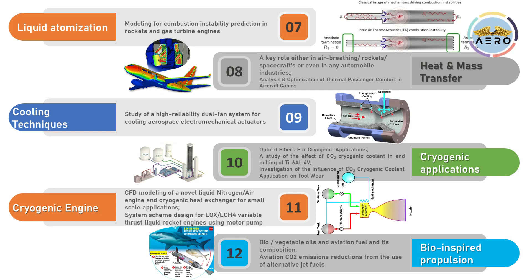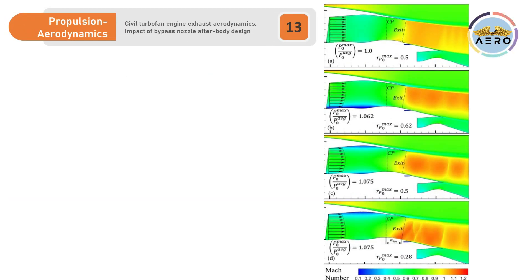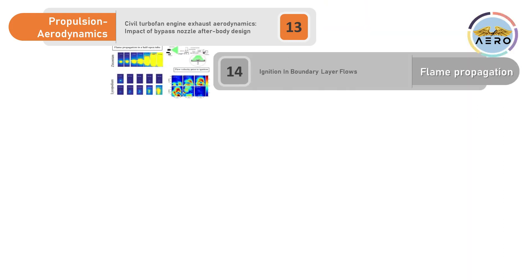Research on biofuels has been ongoing since around 2005, with examples like aviation CO2 emission reductions from use of alternative jet fuels. There are also aviation topics where air movement is crucial to both aerodynamics and engine efficiency — for example, civil turbofan engine exhaust aerodynamics — making them inseparable from aerodynamics and propulsion.